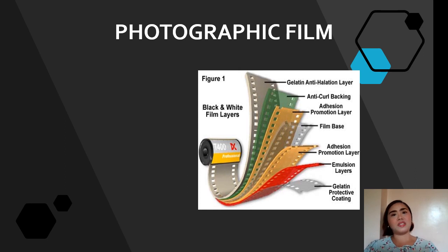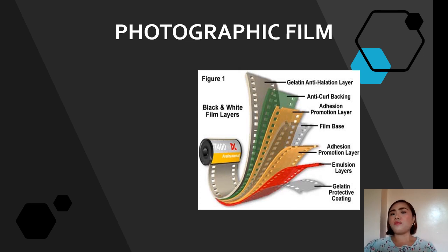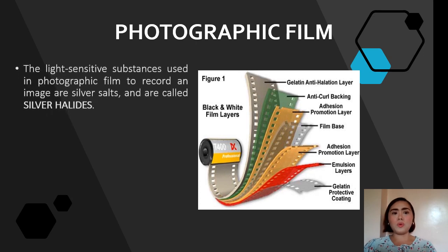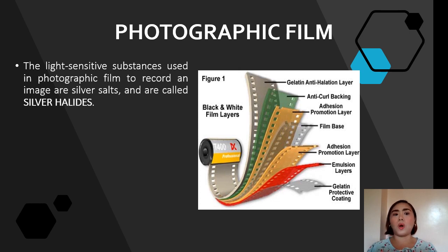An example of a light sensitive surface is your photographic film. If you are what we consider as Batang 90s, you have probably seen a manual camera, wherein to record an image, instead of using SD cards, you need rolls of film. If you look at the photographic film, it is a thin sheet, but underneath lies different layers. Two of the most important layers are the emulsion and the base. Your photographic film contains light sensitive substances called silver salts, or technically, silver halides.